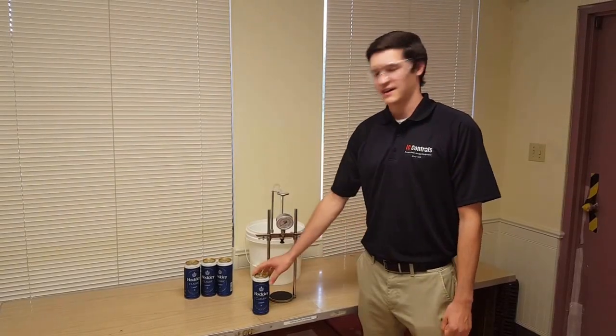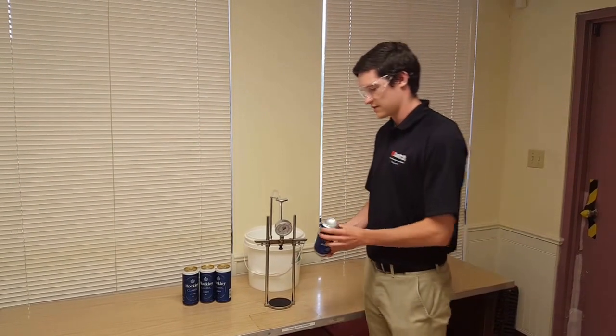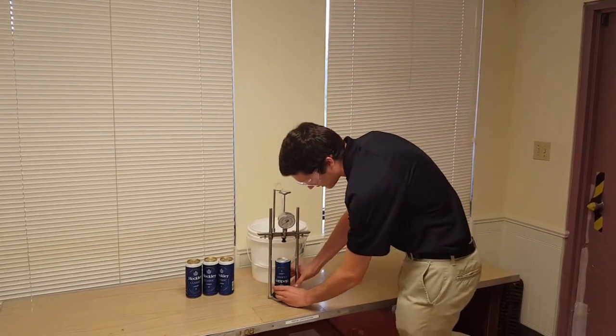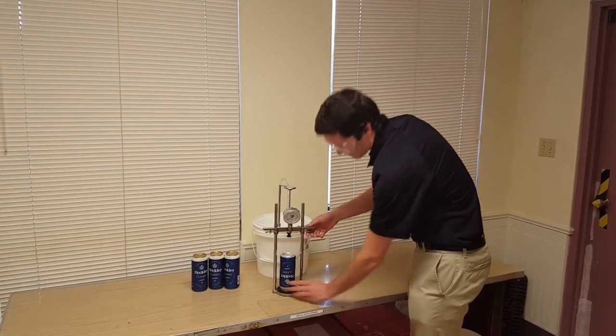Hello, this is IC Control's quick start guide for CO2 measurement. First, place your can upside down, aligning the center of the can with the black rubber seal.